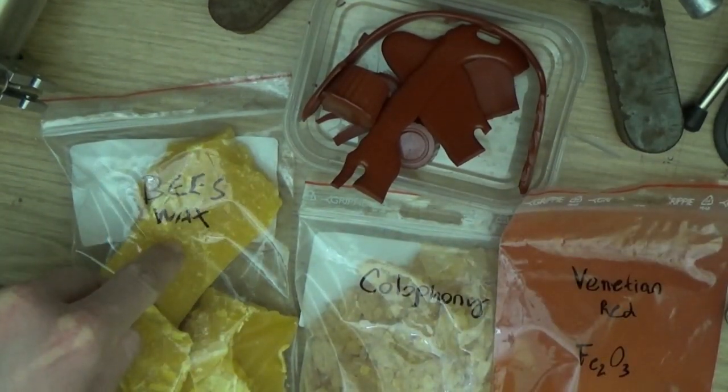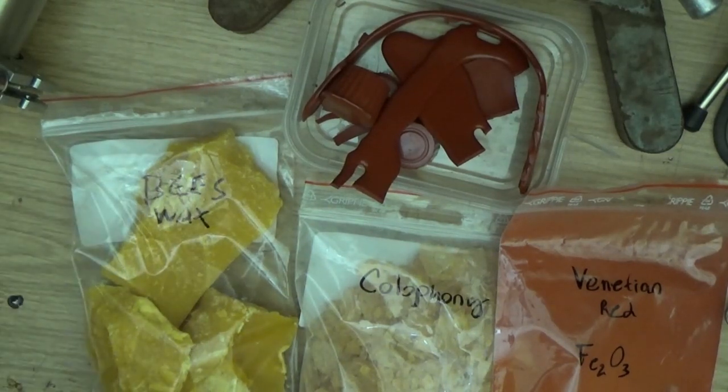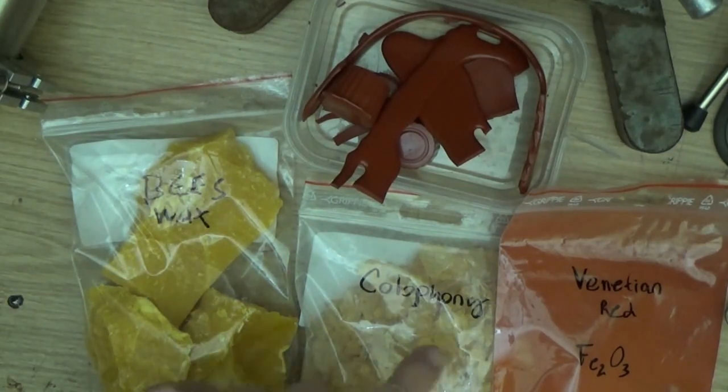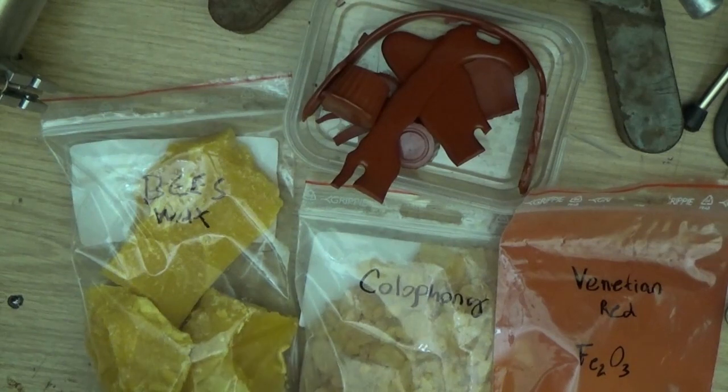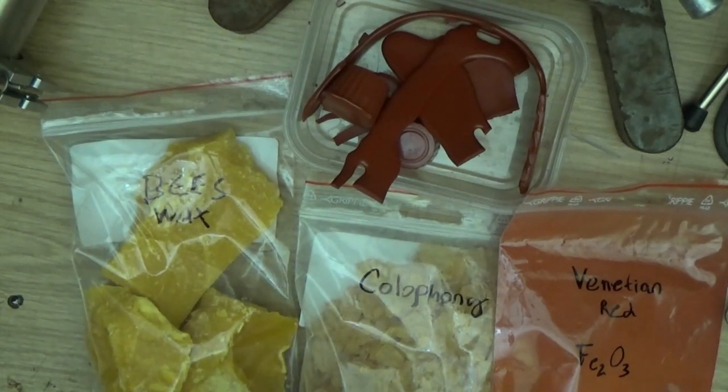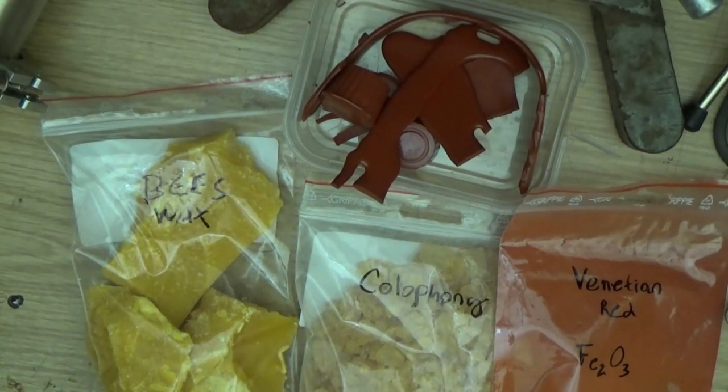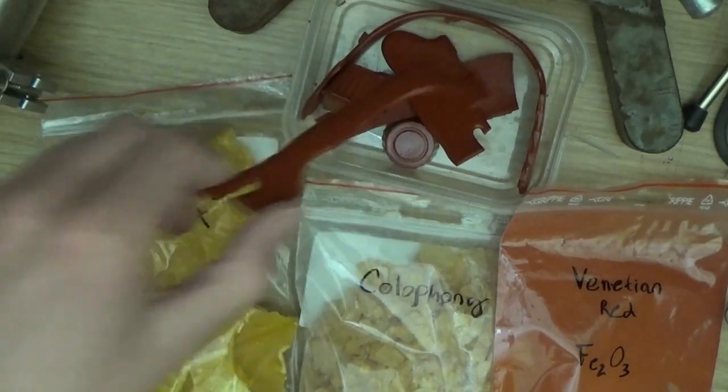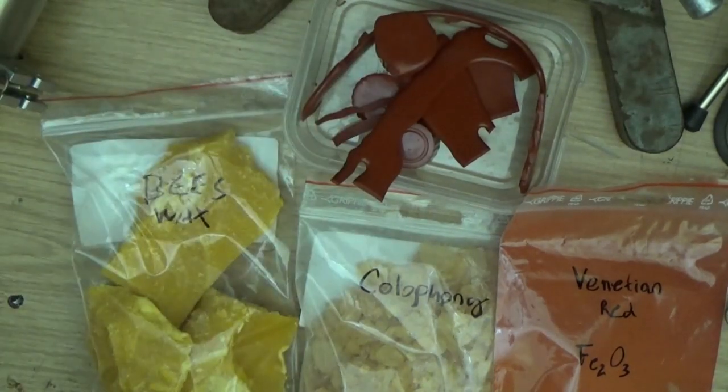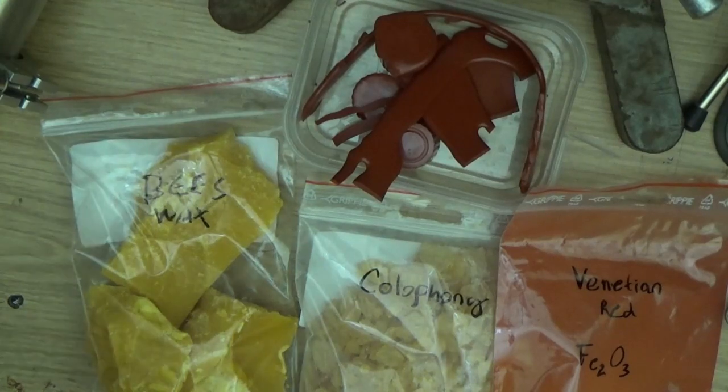You melt the beeswax, in my case 10 grams, and then you add in, slowly, 50 grams of this, a little at a time, and then you add the venetian red. And then you stir it, and then you cool it, and then you pour it into these long things, or pour it into cups, or just dip a brush into the hot melt and brush it on.